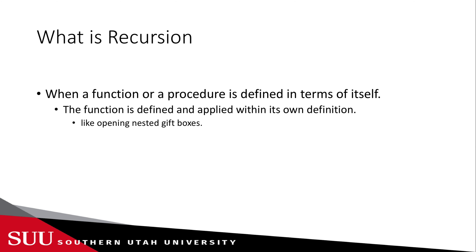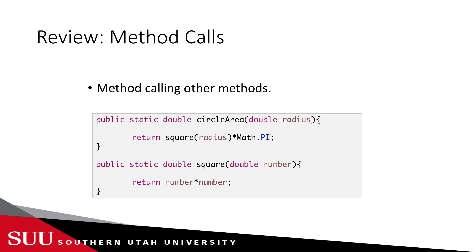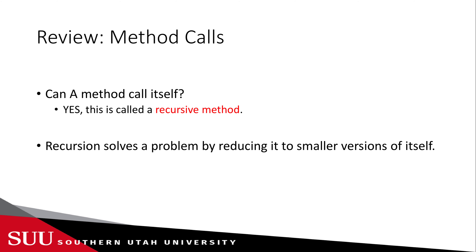So the person before the last will know there is one person behind them, say two total, and pass it back up the line until we know the full count. Now, in method calls we have seen methods that call other methods — for example, a circle area method calling a square method. The question is: can a method call itself? The answer is yes, and this is what we call a recursive method — defined and called within its own definition.